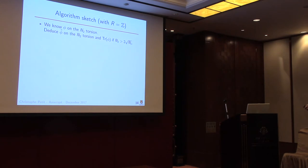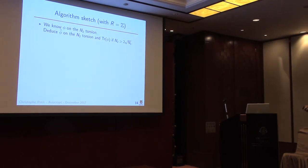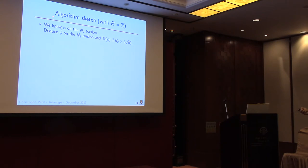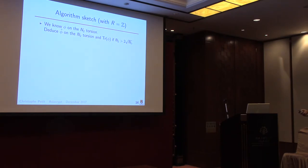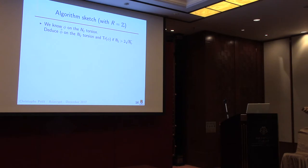Here's a sketch of the algorithm in the case where the known subring is just scalar multiplication. We know phi on the N_2 torsion. This allows us to deduce the action of phi-dual on the N_2 torsion as well, since N_2 is coprime to N_1. If you have the action of phi and phi-dual on the N_2 torsion, you can compute phi + phi-dual, which gives you the trace of phi modulo N_2. You can also bound the trace by 2*sqrt(degree). Assuming N_2 > 2*sqrt(N_1) — which holds for all SIDH-like parameters — you actually get the trace of phi over the integers.